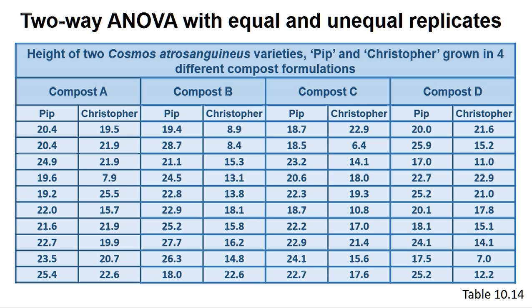The two-way ANOVA test implemented by most programs is reliable with samples that have both equal and unequal replicates, as found with the data in Table 10.19, providing the variances are similar — that is, homogeneous. Samples with unequal variances are most likely to occur with unequal replicates. We can test if variances are homogeneous by doing a version of the F-test first on the data within the program. See Chapter 10 and Box 10.7 for further details. If you get a significant result from the ANOVA, you may then wish to identify which samples are significantly different, and some programs offer post-hoc tests on individual factors and the interaction.